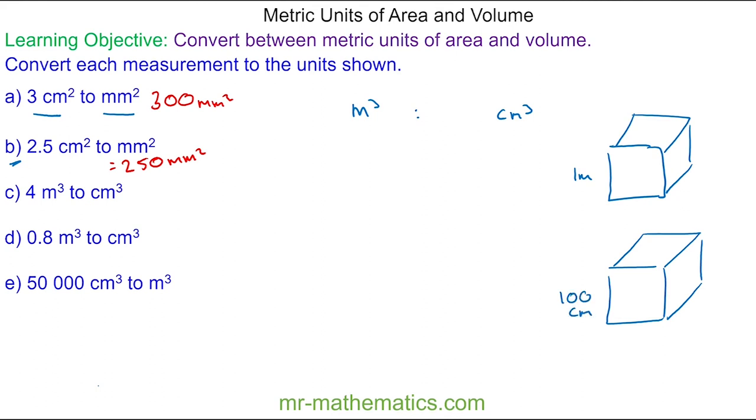They're both the same cube. The volume of the first cube is one metre cubed, and in the second we have 100 multiplied by itself three times, which is one million, or one times ten to the six centimetres cubed.